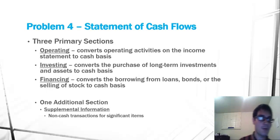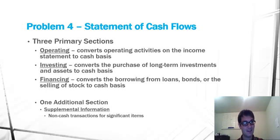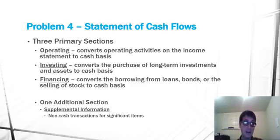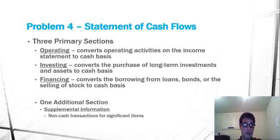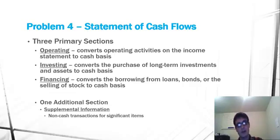There are three primary sections to the statement of cash flows: operating activities, investing activities, and financing activities. There is also an additional section for supplemental information such as non-cash transactions for significant items.